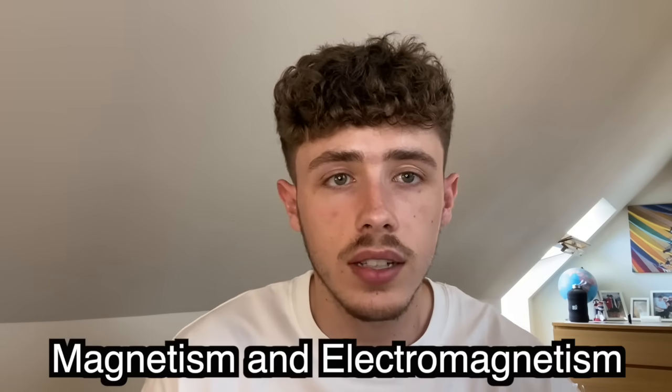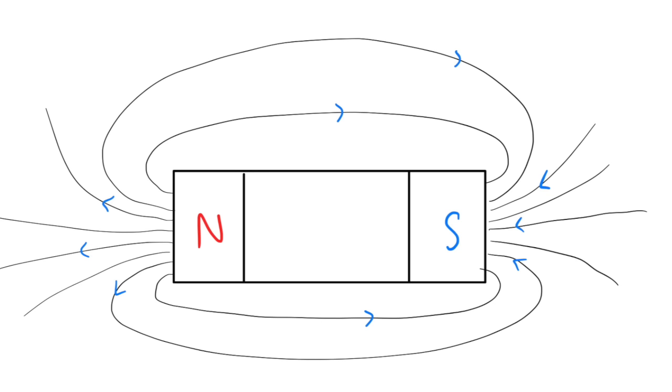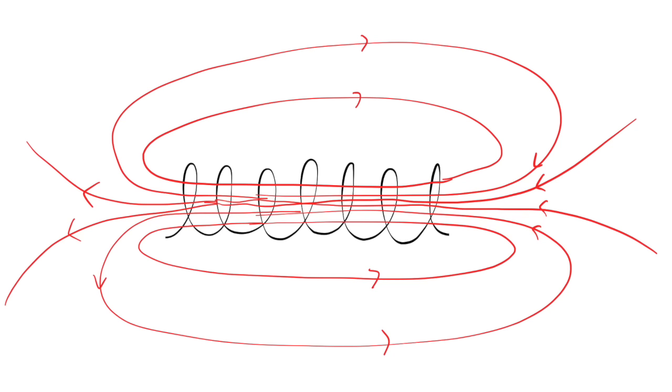Topic number three: magnetism and electromagnetism. A bar magnet contains a magnetic field — you should know exactly what this looks like and the direction the field travels in, from north to south. You can also explore this using the compass practical. Some things are permanent magnets, such as a bar magnet. Others are induced magnets — when placed within a magnetic field, they become magnetized. Examples of materials that become magnetized are iron, steel, nickel, and cobalt. A coil of wire is called a solenoid, and when current passes through it, it produces a magnetic field just like a bar magnet.